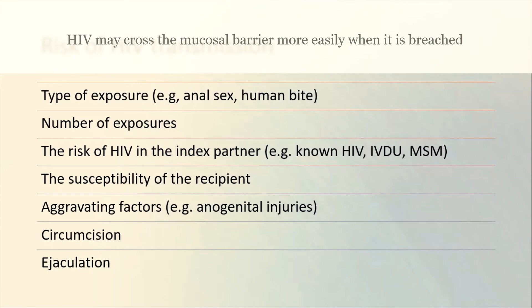The susceptibility of the recipient is also a factor. For example, does the recipient have genital ulcer disease, which may make it easier for the virus to cross the broken mucosal barrier into the body tissues and into the blood where it can replicate? Have there been any aggravating factors such as anogenital injuries or trauma? If there is trauma or anogenital injuries present, there may be a breached mucosal barrier, making it easier for the virus to cross into the blood.